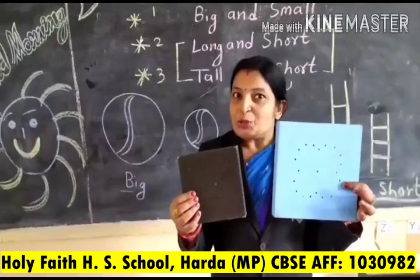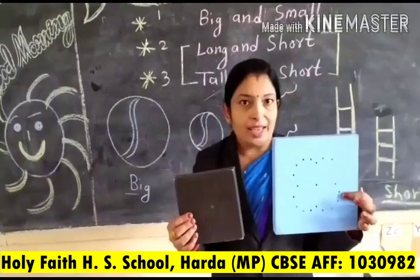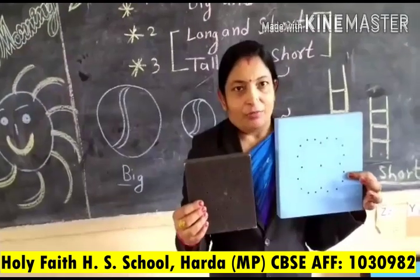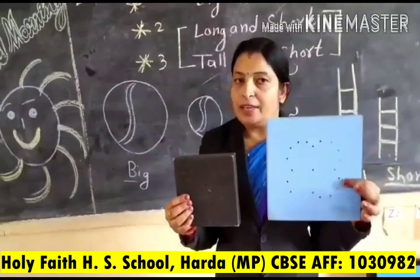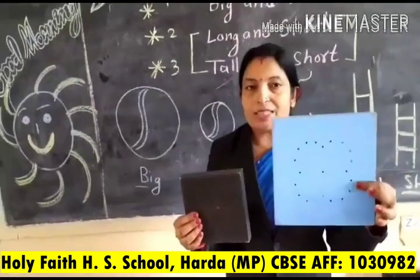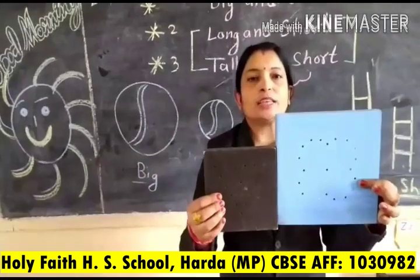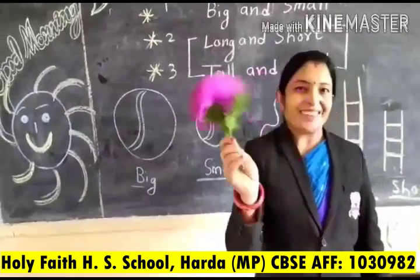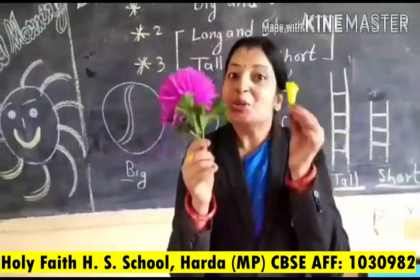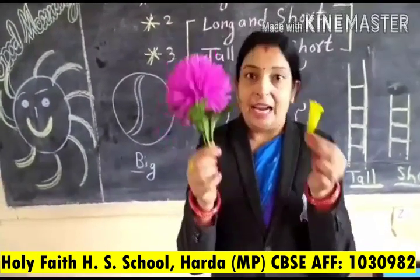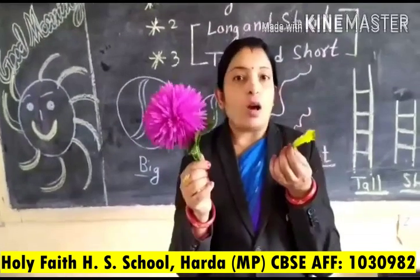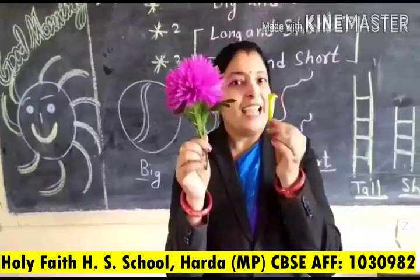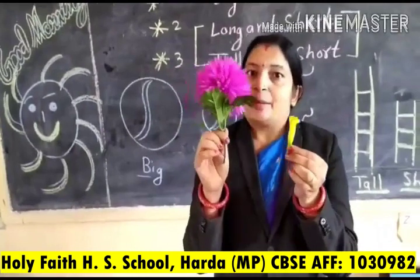Look children — these are two boxes. Are they the same size or not? Identify which one is small and which one is big. This box is big and this box is small. Look — these are flowers. Look and identify which one is big and which one is small. This one is small and this one is big.